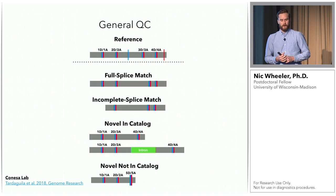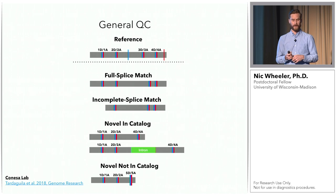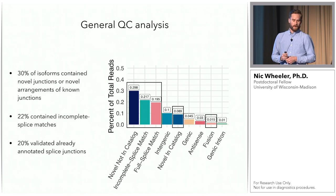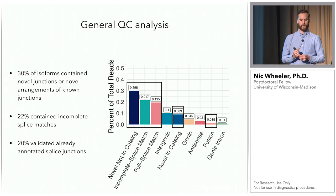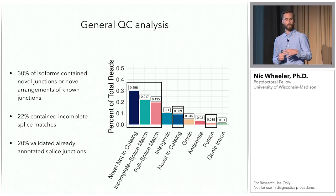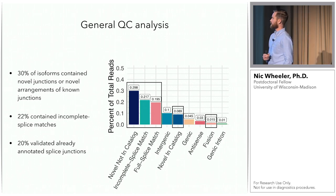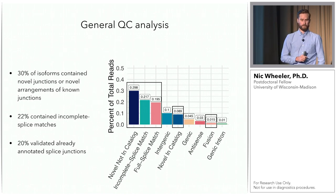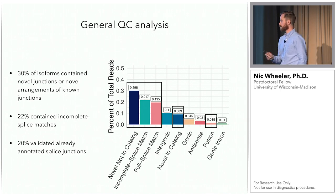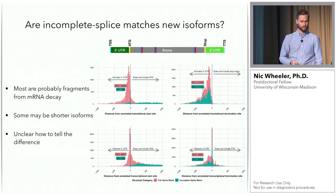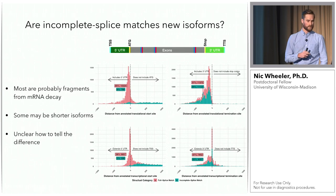We used SQANTI categories: full splice match, incomplete splice match, novel in catalog, and novel not in catalog. In contrast to something like the grizzly bear talk yesterday — where most isoforms were full splice matches — most of our isoforms were novel not in catalog. That immediately shows this is really worthwhile because we're identifying new splice junctions that weren't originally annotated in the genome. About 22% contain incomplete splice matches, which is probably mostly fragmented mRNA. About 20% had validated annotated splice junctions. We're also looking at fusions that could be polycistronic.